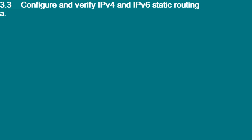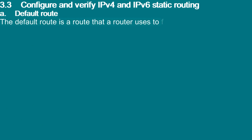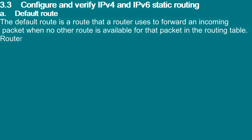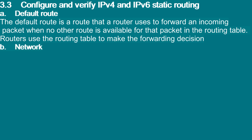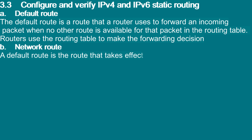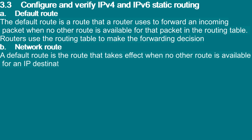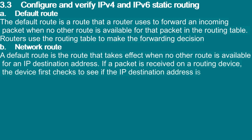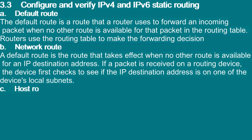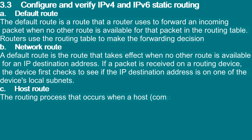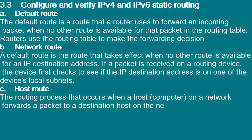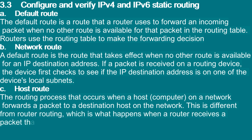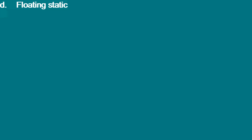3.3 Configure and verify IPv4 and IPv6 static routing. A — Default route: The default route is a route that a router uses to forward an incoming packet when no other route is available in the routing table. B — Network route: A default route takes effect when no other route is available for an IP destination address. If a packet is received on a routing device, the device first checks whether the IP destination address is on one of the device's local subnets. C — Host route: Host routing is the process that occurs when a host computer forwards a packet to a destination host on the network. This is different from router routing, which occurs when a router receives a packet that needs to be forwarded to a destination host.